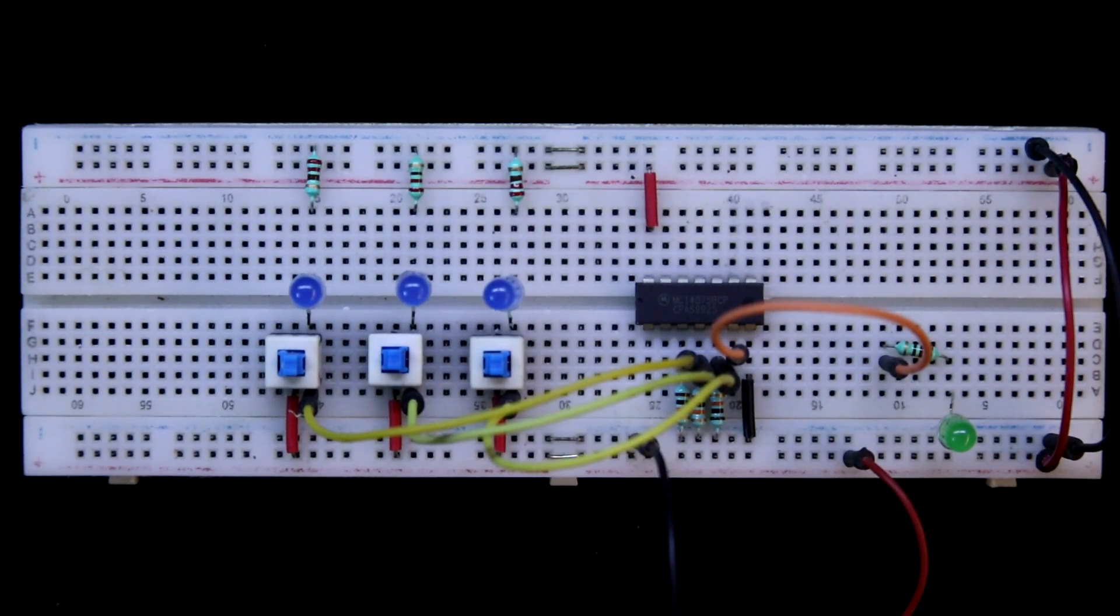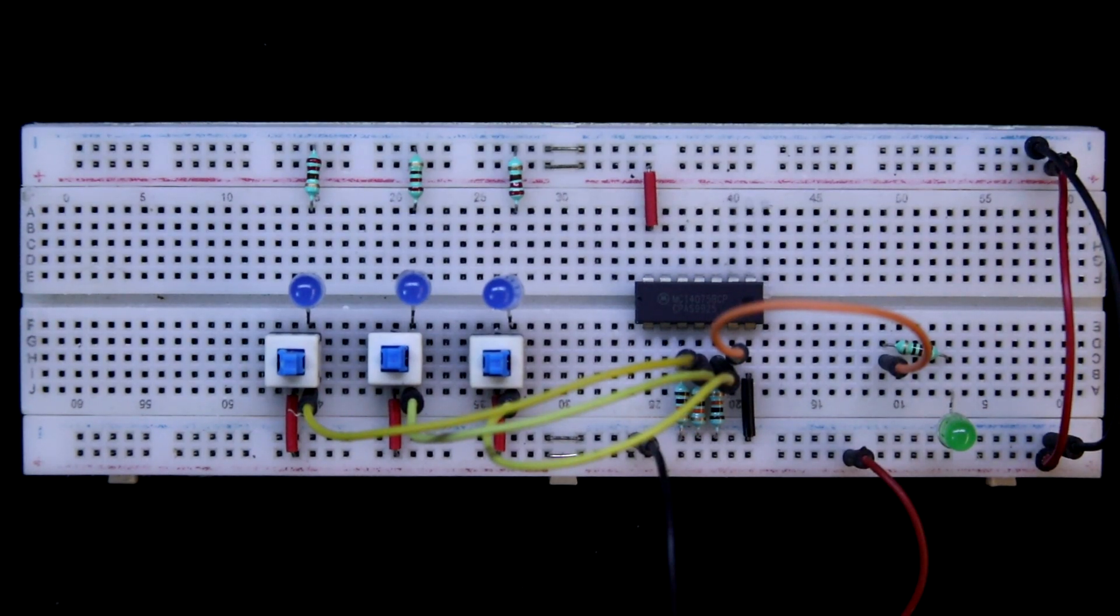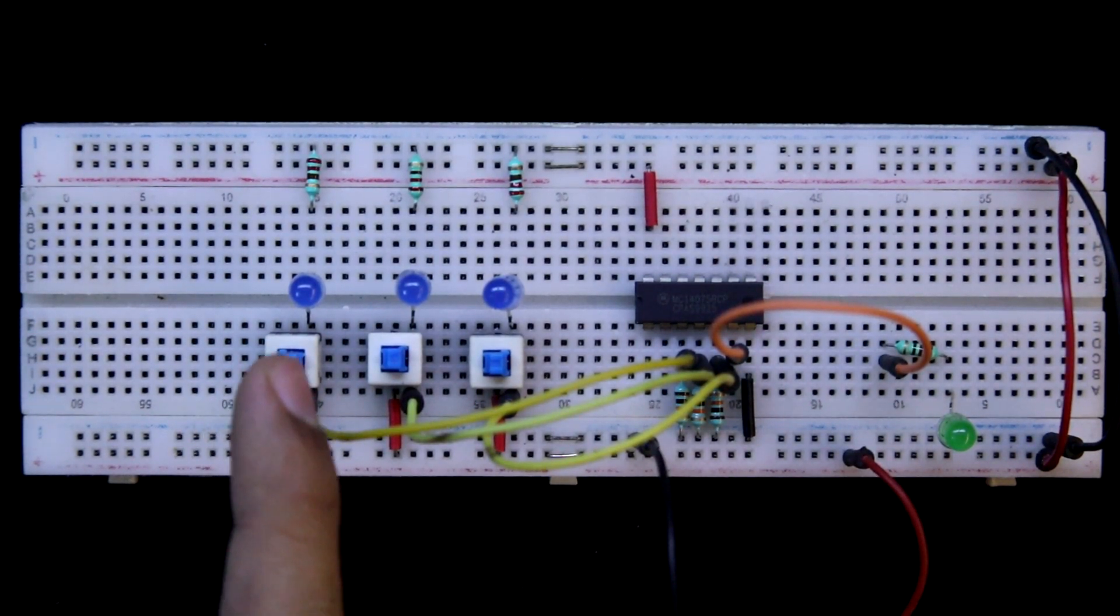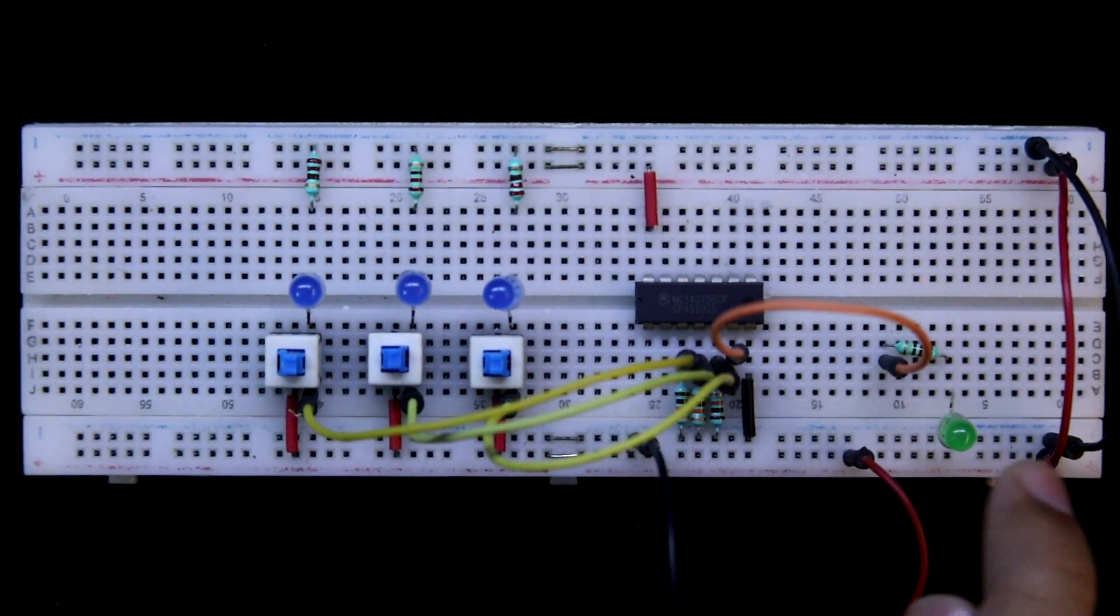In this video, I am going to show you the working of IC4075. It is a 3-input OR gate. Here all the inputs are 0, so we are getting output as 0.